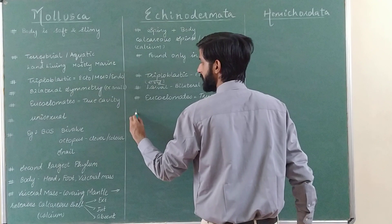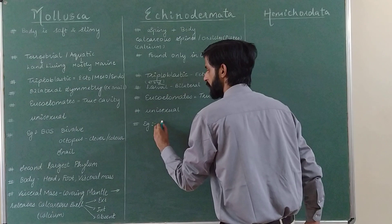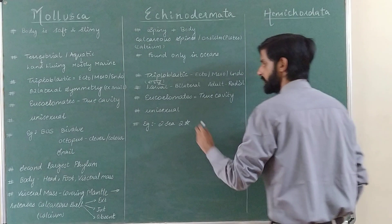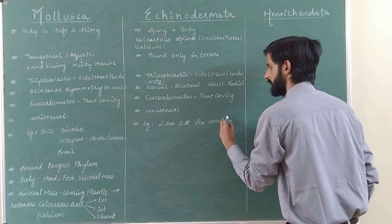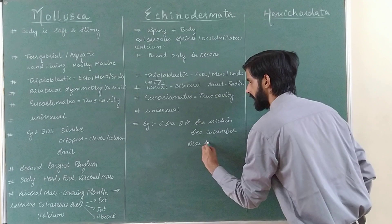In terms of sexuality, all the animals in Echinodermata are unisexual. For examples, remember two examples starting with 'sea' and two related to 'star': sea urchin, sea cucumber, starfish, and brittle star.